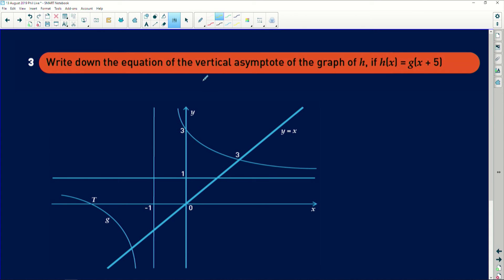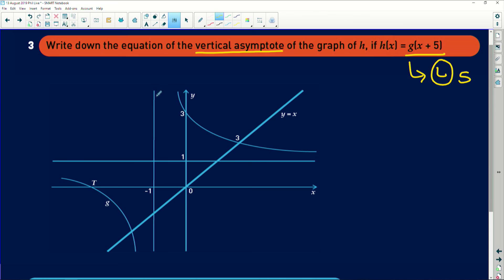Now it says write down the equation of the vertical asymptote of the graph of h if h of x equals g of x plus 5. This means that, remember, the plus 5 shifted left 5 units.